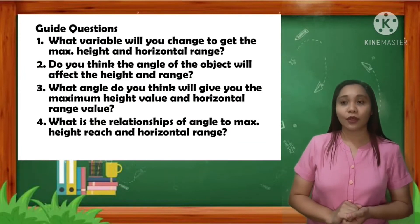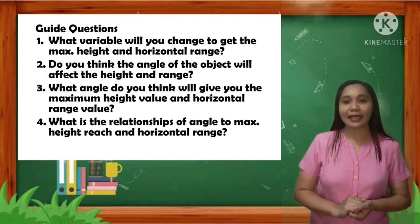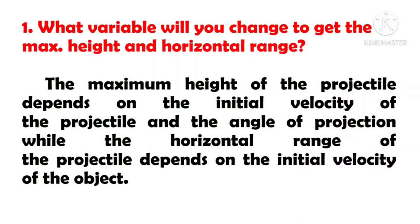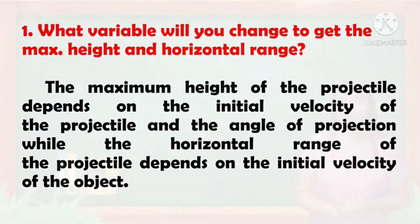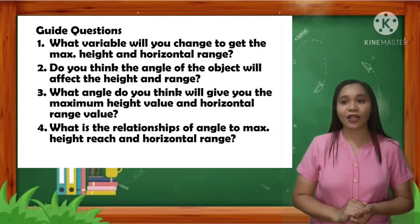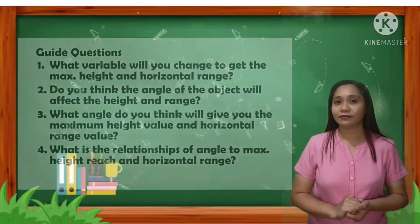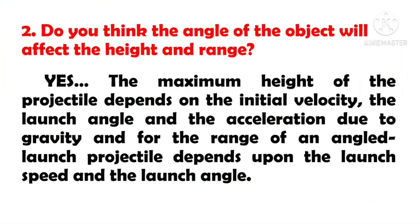What variable will you change to get the maximum height and horizontal range? The maximum height of the projectile depends on the initial velocity of the projectile and the angle of projection, while the horizontal range of the projectile depends on the initial velocity of the object. Yes! The maximum height of the projectile depends on the initial velocity, the launch angle, and the acceleration due to gravity. And for the range of an angled launch, projectile depends upon the launch speed and the launch angle.